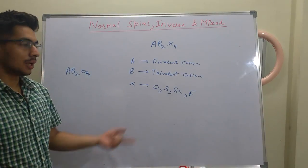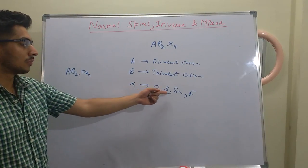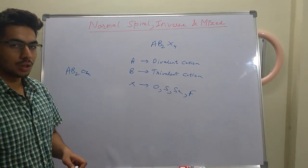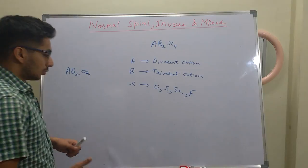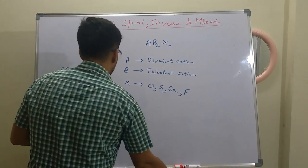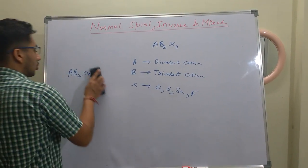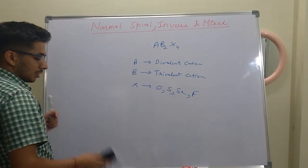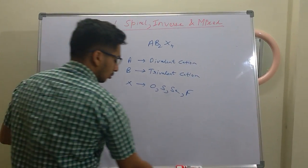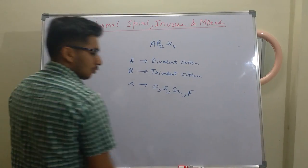X could be oxygen, sulfur, selenium, or fluorine. Now let's look at what normal spinels, inverse spinels, and mixed spinels are.